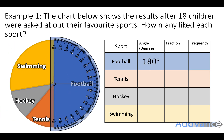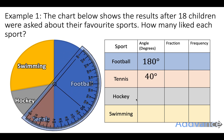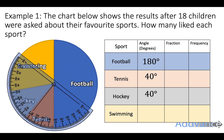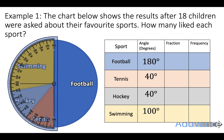In the football sector we can see the angle is 180 degrees exactly, so we put 180 degrees in our table. Tennis - let's measure tennis - this is 40 degrees. Hockey - that's also 40 degrees. And the whole yellow sector, swimming, is 100 degrees.